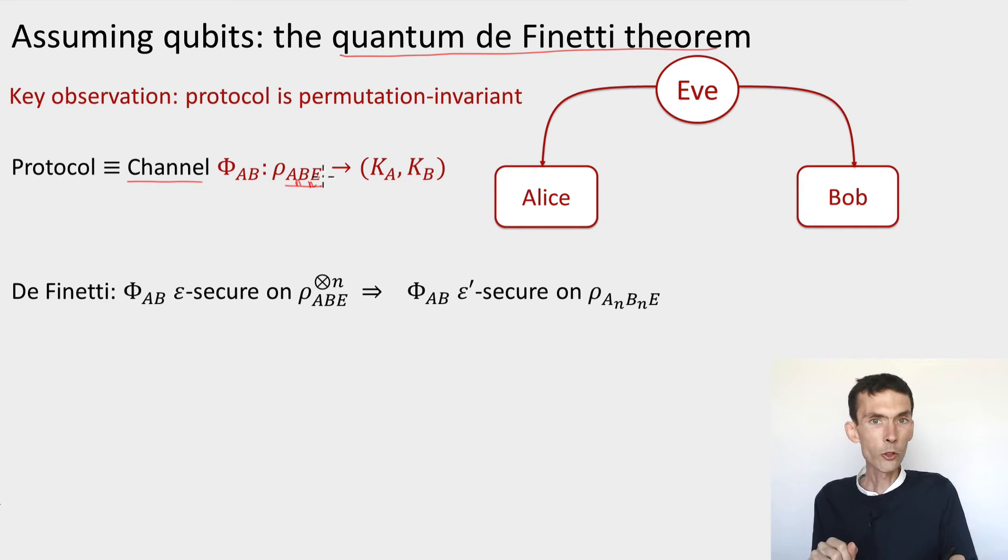So you can think of the whole protocol as a quantum channel, simply a completely positive trace-preserving map that takes as input an arbitrary state that was prepared by the eavesdropper A^N B^N E. And then it performs a lot of operations on this state. There's measurements, there's some tests, there's a lot of things that are performed.